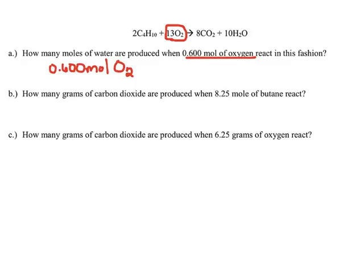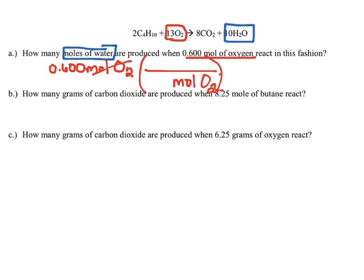They don't want information about oxygen — I eventually want to get into moles of water. So I'm starting with one completely different substance, O2, and I'm changing it into a different substance, water. Whenever I need to relate one substance to another, I'm going to use a chemical reaction and use those coefficients as conversion factors, which we call stoichiometry. Let's find water in my reaction — there it is, 10 H2O. So I'm going to make a conversion factor. I want moles of O2 in the bottom so it cancels out, and I want moles of H2O on top so that's what I'm left with.